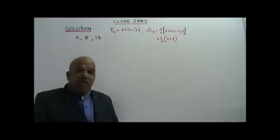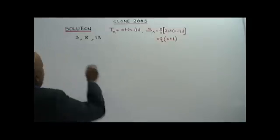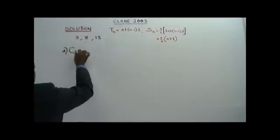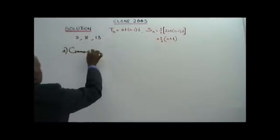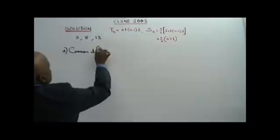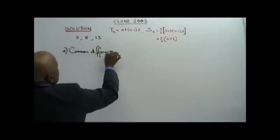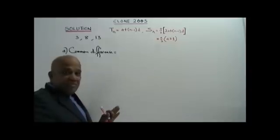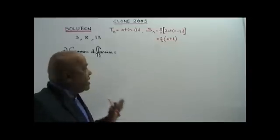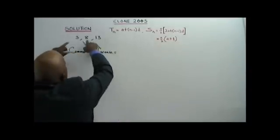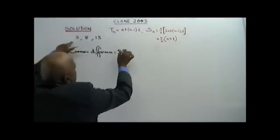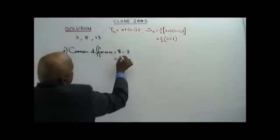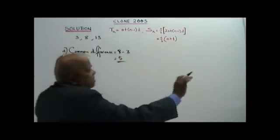Part A, you are supposed to find the common difference. Common difference equals the right term minus the immediate left term. So we take 8 minus 3 — right minus left — equals 5. That is your answer. Very simple.